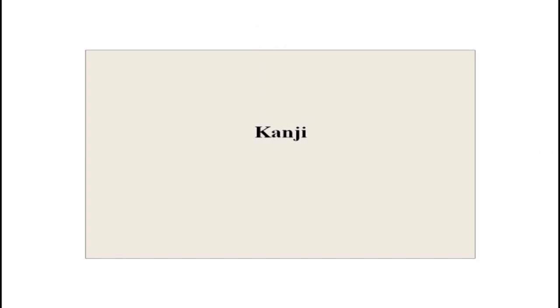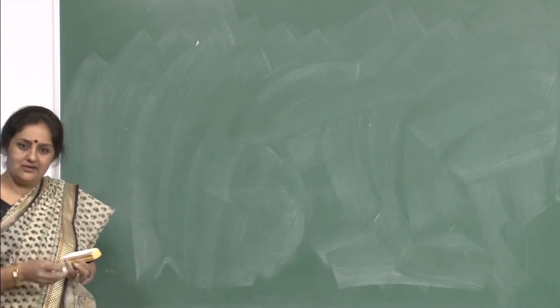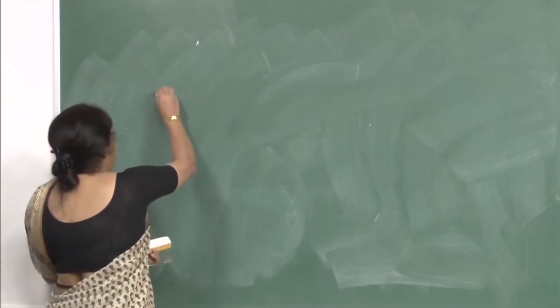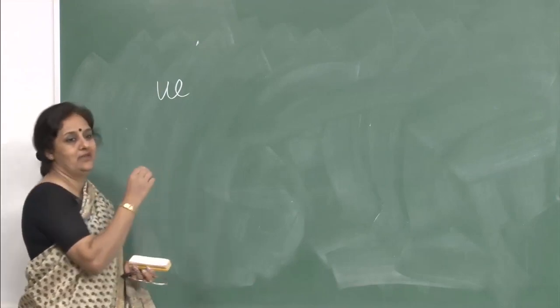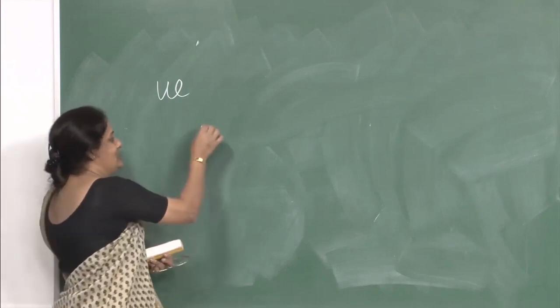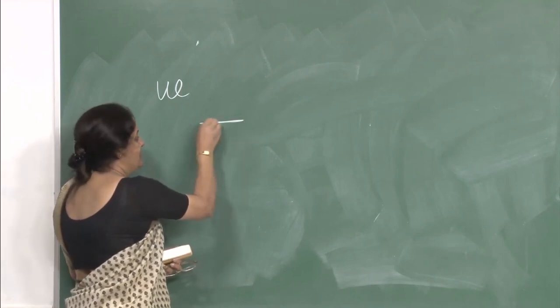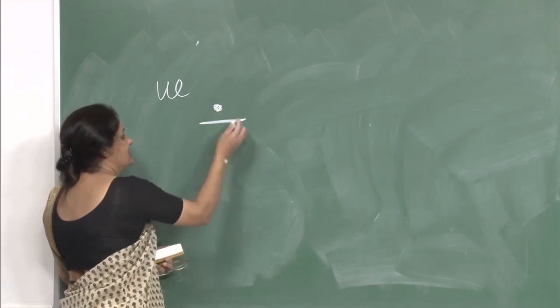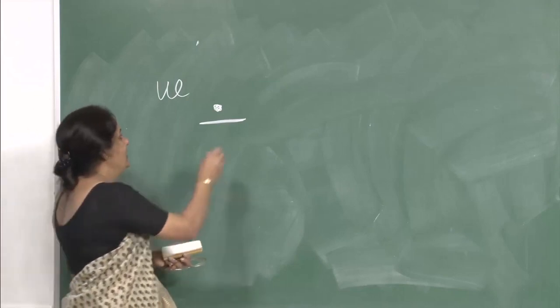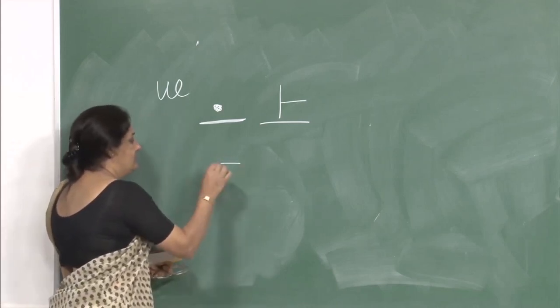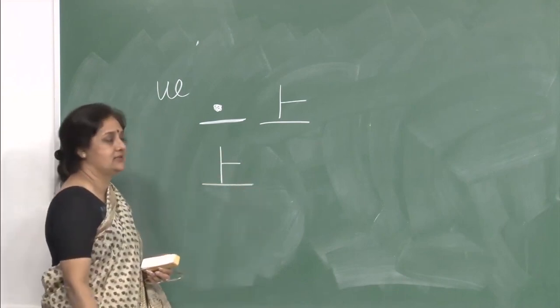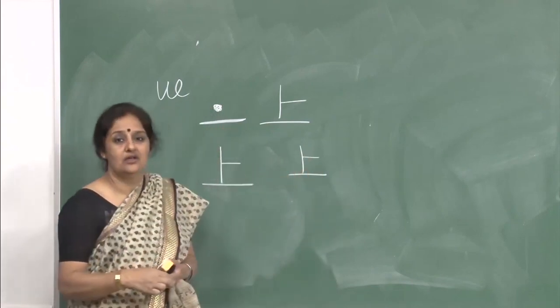We have been doing kanji all along. Today we cover some simple ones since we did locational nouns. First is ue — meaning on top or above. The Chinese showed ue as a dot on the ground, which later evolved into this character — a three stroke character. Horizontal first, then vertical, then the final stroke. Ue means upper, above or on top.